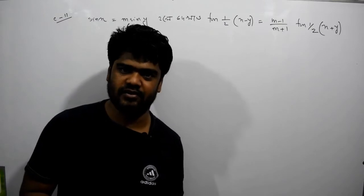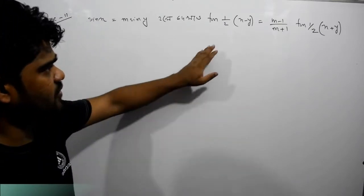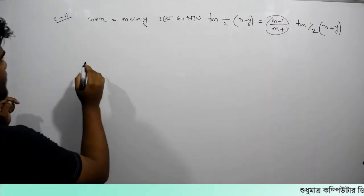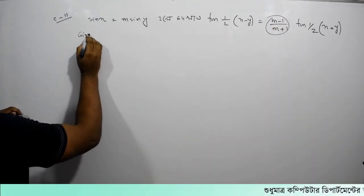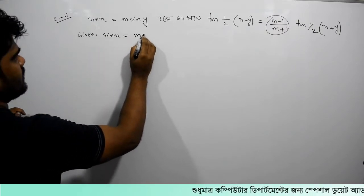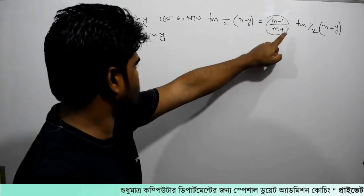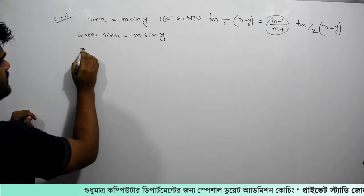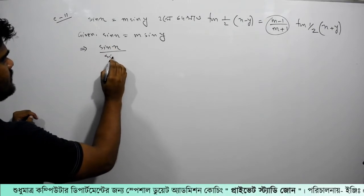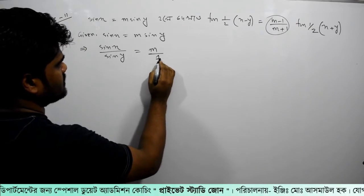Given sin x is equal to m sin y. So this gives us that sin x divided by sin y is equal to m. And m minus 1 is here, it comes from m, and there is another form: m minus 1 divided by m plus 1, where sin x divided by sin y is equal to m. So m and n is equal to 1.